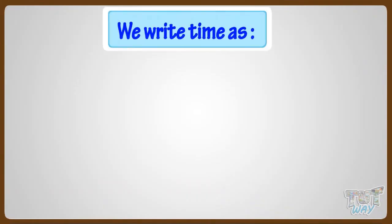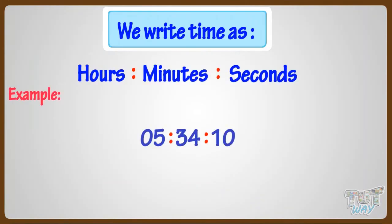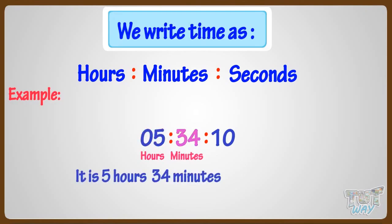First of all, we should know that we write time as hours, minutes, seconds. For example, here it is 5 hours, 34 minutes, and 10 seconds.